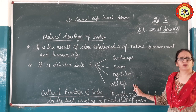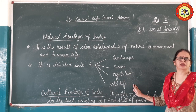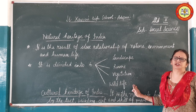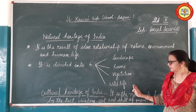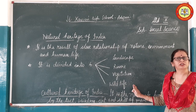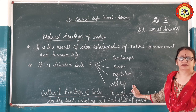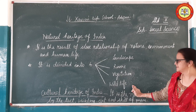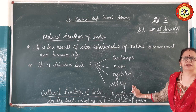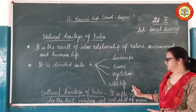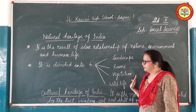Wildlife is the fourth category of natural heritage. Sanctuaries are made to protect the wild creatures in the country. We have the Sasangir forest for Asian lions. Many laws have also been made for the protection of wildlife in the country.